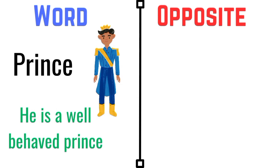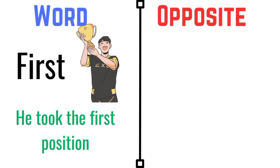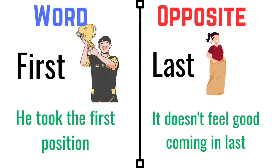Prince. He is a well-behaved prince. The opposite of prince is princess. The princess smiled. First. He took the first position. The opposite of first is last. It doesn't feel good coming in last.